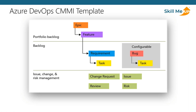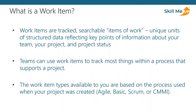In Azure DevOps, we have project-oriented relationships — projects are driven using workflow within templates. Everything in Azure DevOps within these projects is tracked as work items. Work items are unique and searchable items of work — unique units of structured data reflecting key points of information about the team, the project, and the project status. Most interactions you'll have with Azure DevOps in terms of process are going to be related to work items, whether they're stories, tasks, epics, features, or bugs — every single one of those things is a form of work item.